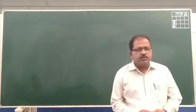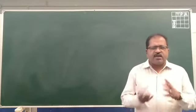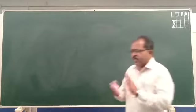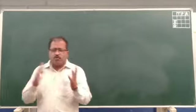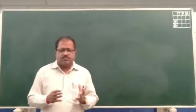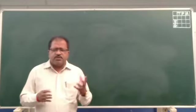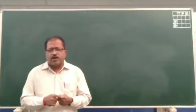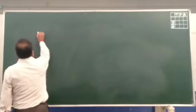Welcome back. Let us discuss about the spinal cord, the second part of the central nervous system. As I told you, the central nervous system, peripheral nervous system, and autonomic nervous system. The central nervous system consists of two parts: brain and spinal cord. We already discussed about the brain; now we are going to discuss about the spinal cord.